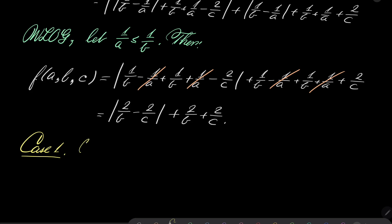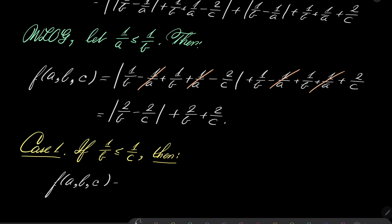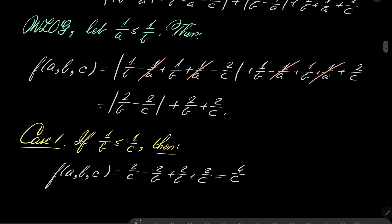Case one: if 1/b ≤ 1/c, then f(a, b, c) equals |2/c - 2/b| + |2/b + 2/c|, which gives (2/c - 2/b) + (2/b + 2/c) = 4/c. Since 1/c is greater than or equal to both 1/b and 1/a, this equals four times the maximum of 1/a, 1/b, 1/c.